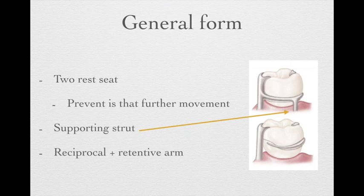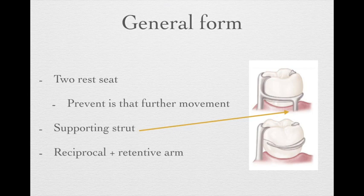When designing a ring clasp, you should have two rest seats, starting from the reciprocal arm and going to the retentive arm. The reciprocal and retentive arm locations still follow the regular rules of the circumferential clasp.